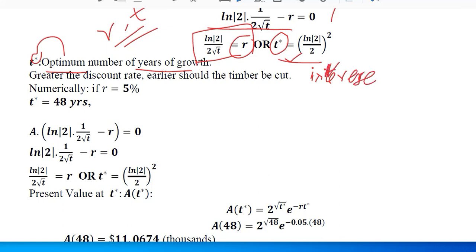So an inverse relation will be there. Greater discount rate will lead to a smaller value or smaller present value of the timber.